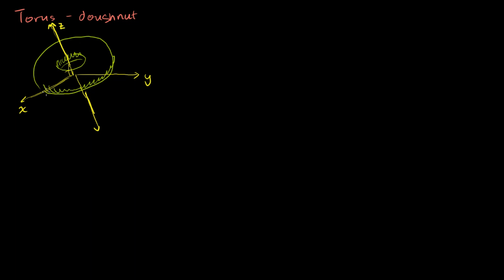If you imagine the cross-section of this donut in the xz-plane — if you were to slice it there — it would trace out a circle. And if you go around, you get a circle everywhere. So if you think about it, it's a bunch of circles rotated around the z-axis. That gives us good intuition for the best way to parameterize this surface.